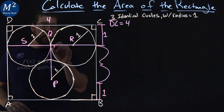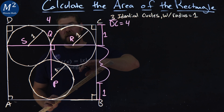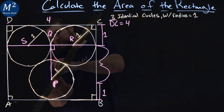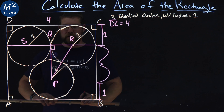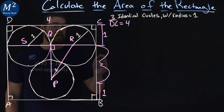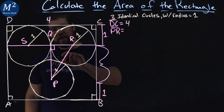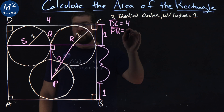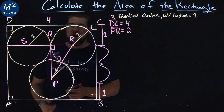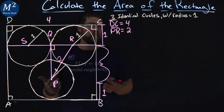Line PQ is going to be perpendicular — we have a right angle going on here. We don't know the length of PQ, but we can find the length of PR. Drawing another line, we get a nice little triangle. This is the point of intersection where the two circles touch, so we know that PR is the length of two radii added together — that's 2.